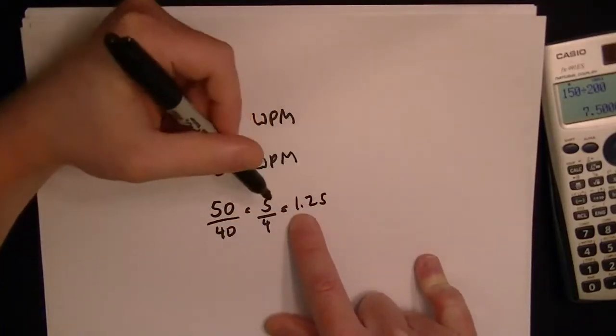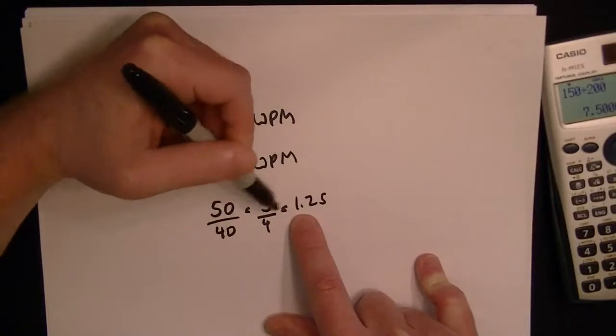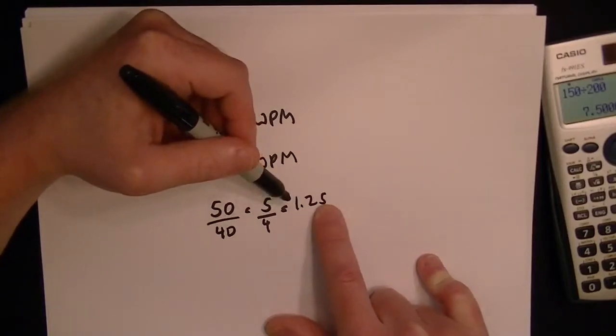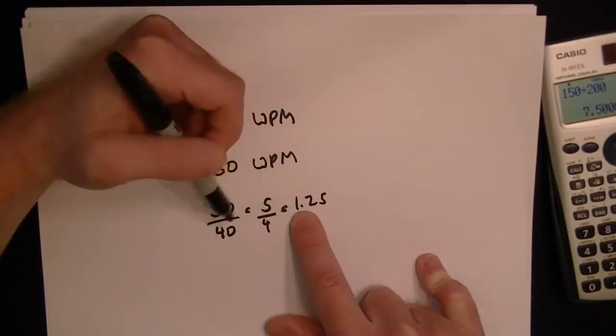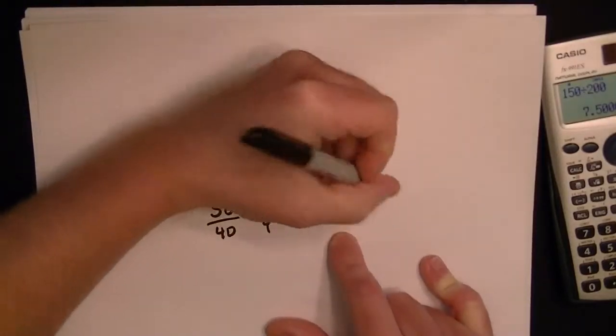So in other words, this ratio shows that it's one and a quarter, so the increase is going to be a 25% increase.